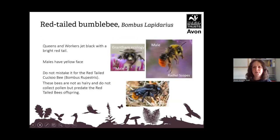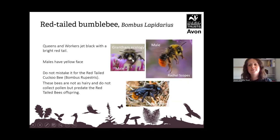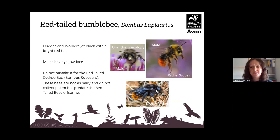The red-tailed bumblebee, Bombus lapidarius — the pictured male has a yellow face and a bright red tail. The queens and female workers are all black and very fluffy with a red tail. The males also have a moustache. Do not mistake it for the red-tailed cuckoo bee, Bombus rupestris, which has fewer hairs, doesn't collect pollen, and predates on the red-tailed bee's offspring.